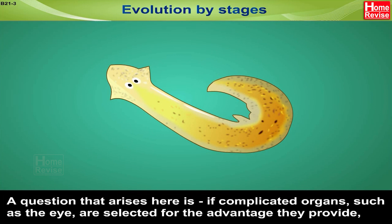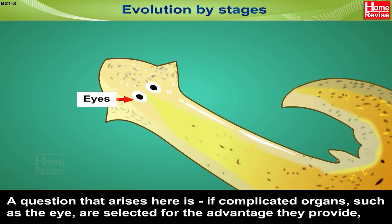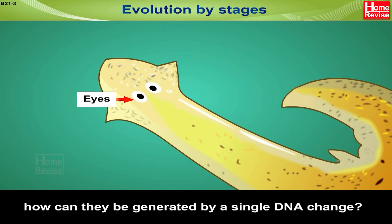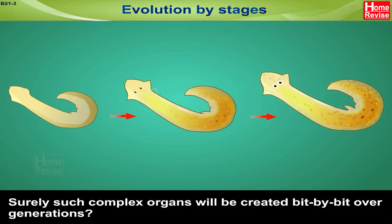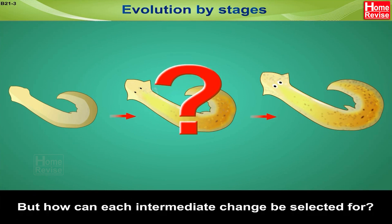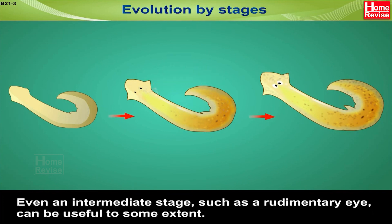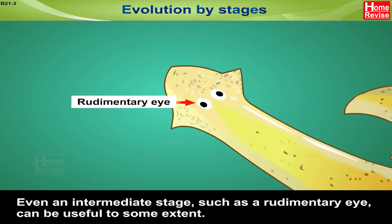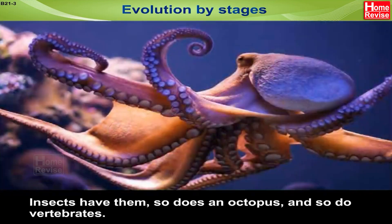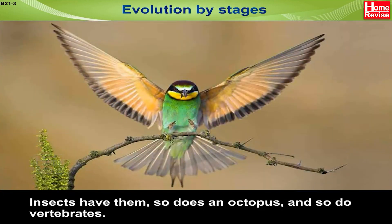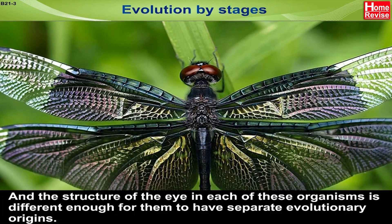Evolution by stages. A question that arises is: if complicated organs such as the eye are selected for the advantage they provide, how can they be generated by a single DNA change? Surely such complex organs will be created bit by bit over generations. Even an intermediate state such as a rudimentary eye can be useful to some extent — this might be enough to give a fitness advantage. Insects have eyes, so does an octopus and so do vertebrates, and the structure of the eye in each of these organisms is different enough for them to have separate evolutionary origins.